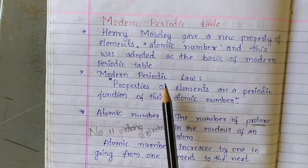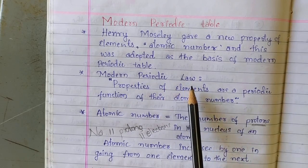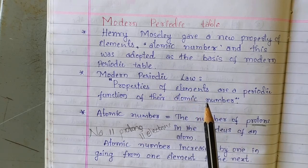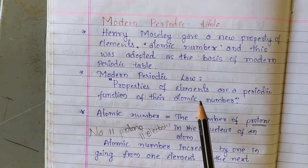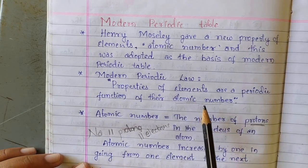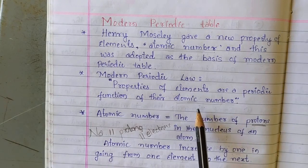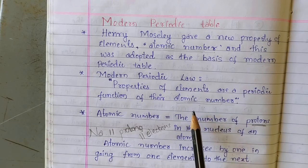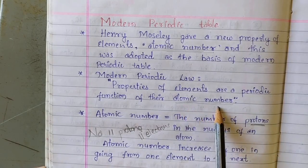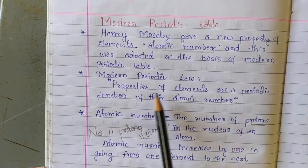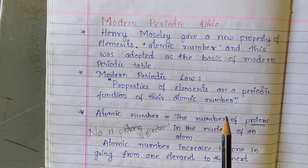Children, remember the Mendeleius periodic law. In that law, it states that properties of elements are the periodic functions of their atomic mass. Here, atomic number is the fundamental property of an element to classify elements into different classes and to explain the properties of those elements. Properties of elements are a periodic function of their atomic number.